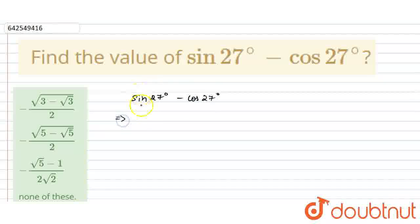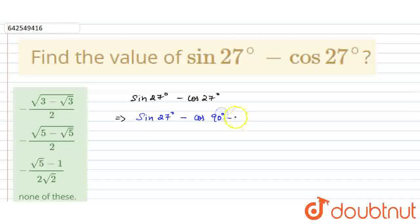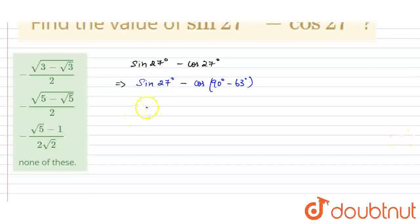Okay students, I am going to write down this one as sin 27 degree minus cos 27 degree. I am going to turn it as 90 minus 63 value. So cos 90 degree minus 63 degree will become sin 27 degree. Now I am going to simplify this one.